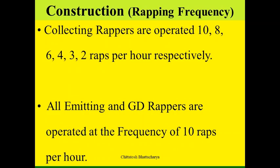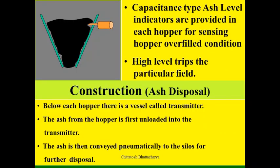Capacitance type ash level indicators are provided in each hopper for sensing the hopper ash level, and high-level trip alarms are provided. For ash disposal, below each hopper there is a transmitter — ash from the hopper is first unloaded into the transmitter and then conveyed pneumatically to the silos for further disposal in the ash dikes.